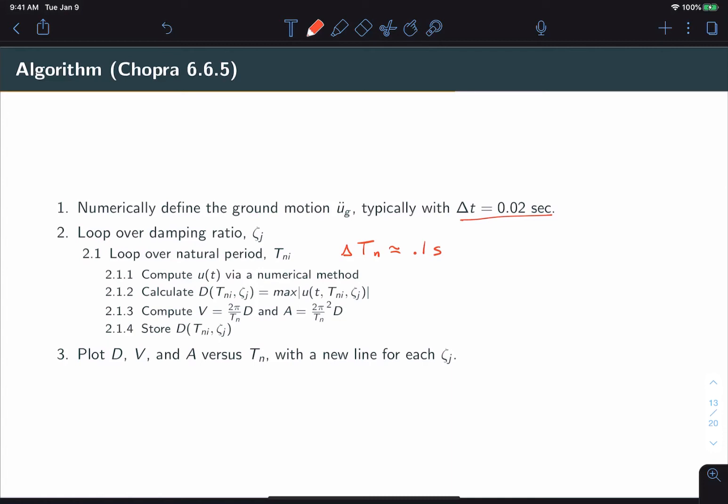For each value of Tn and zeta, then you will compute the displacement response via some numerical method. Calculate the maximum of that response, and that will be the value of D. Then you will compute V and A based on the relationships to natural frequency or natural period.